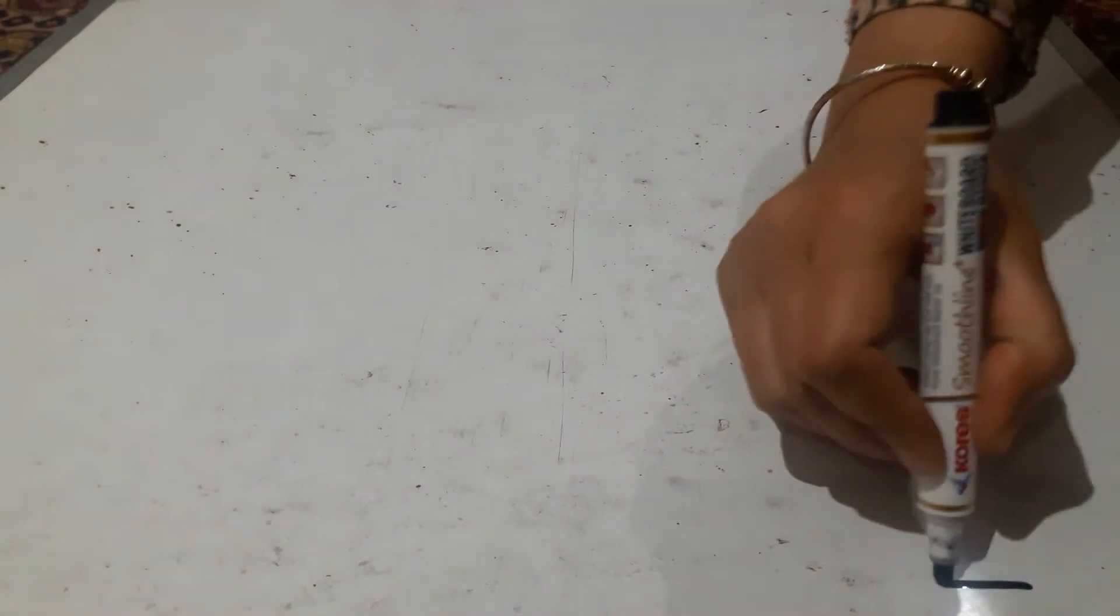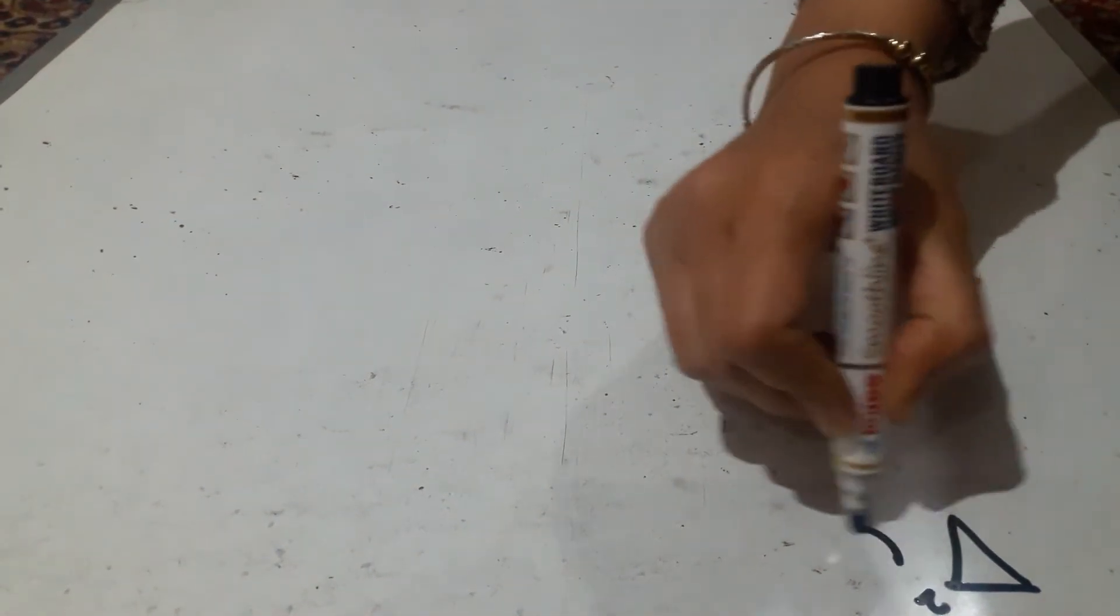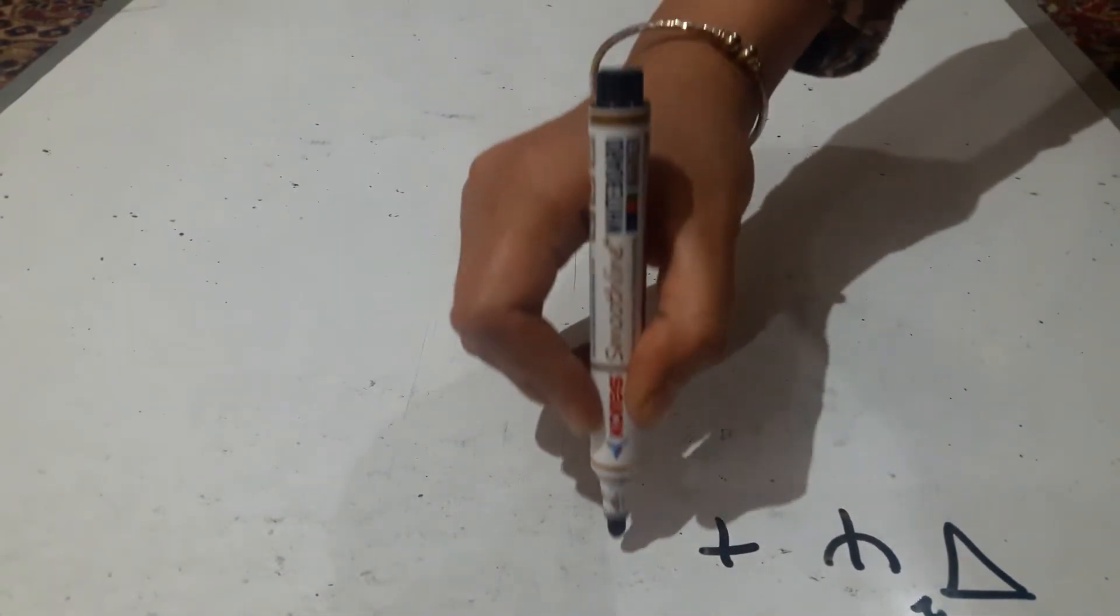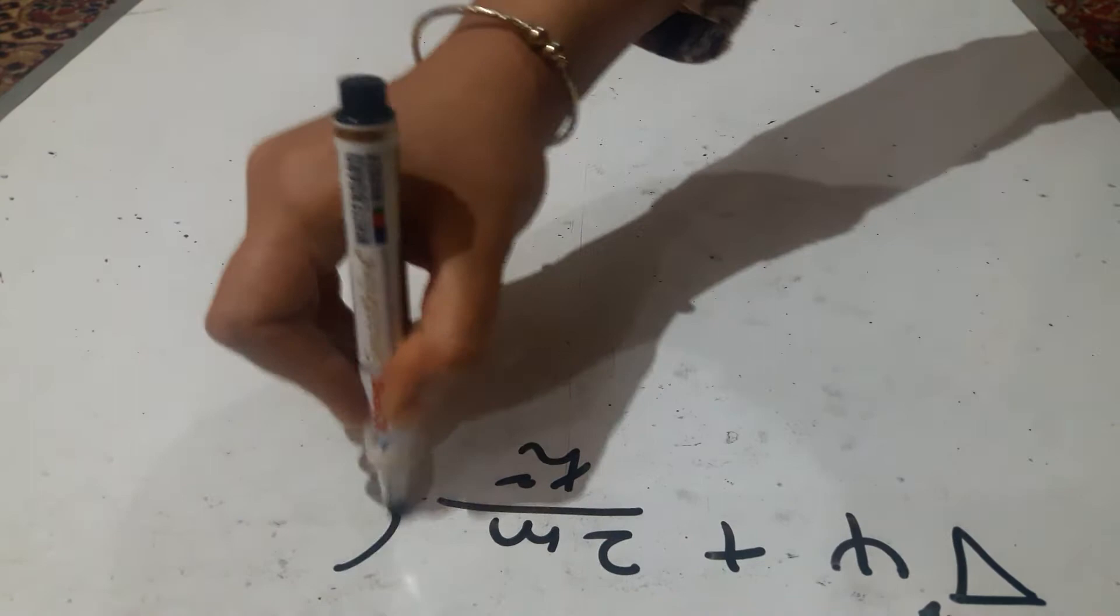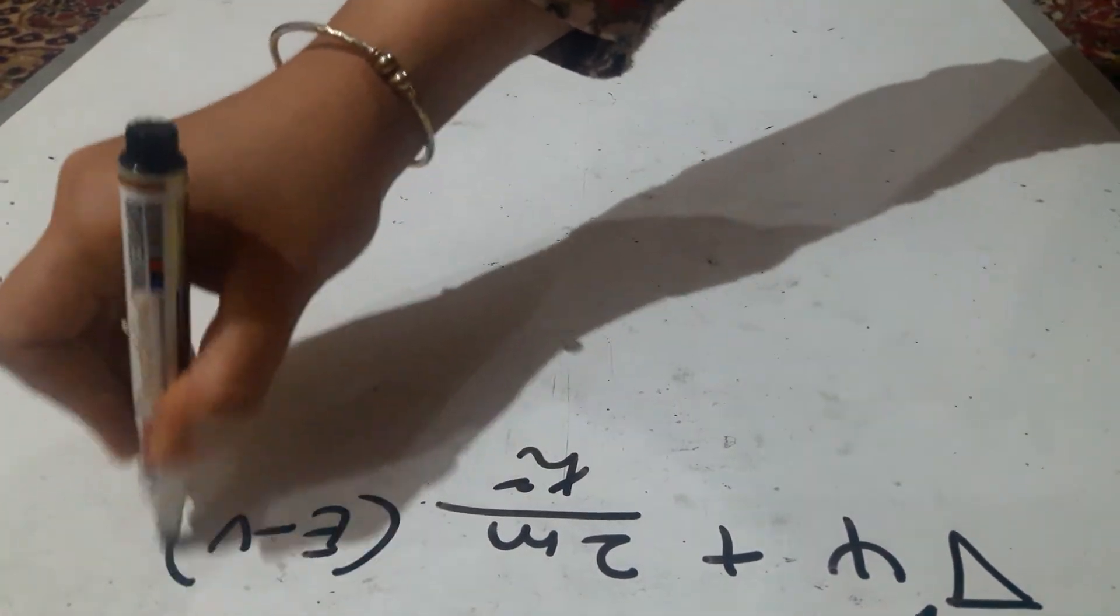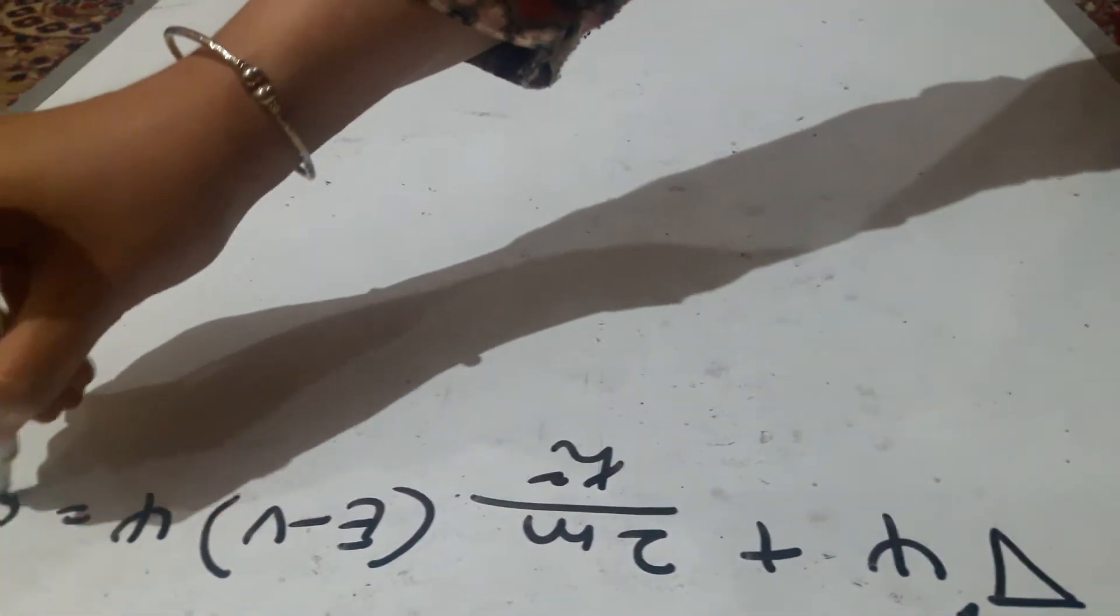Dear students, now we will come to the time dependent part of Schrödinger equation. We are already done with the time independent part, and that is del square psi by 2m by h cross square, e minus v psi is equal to 0.